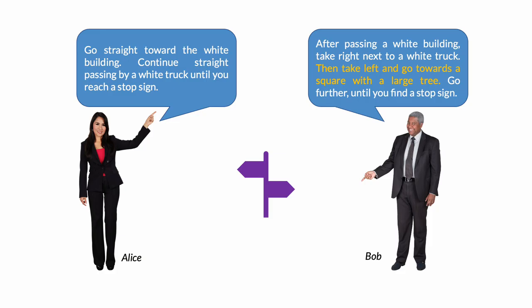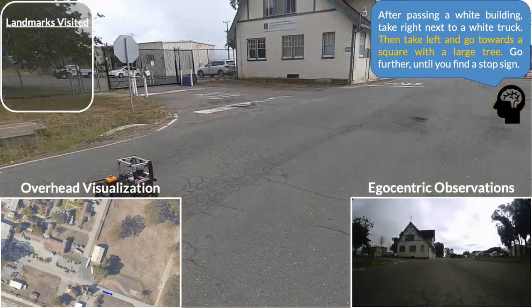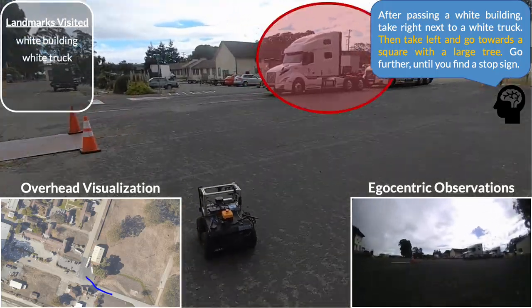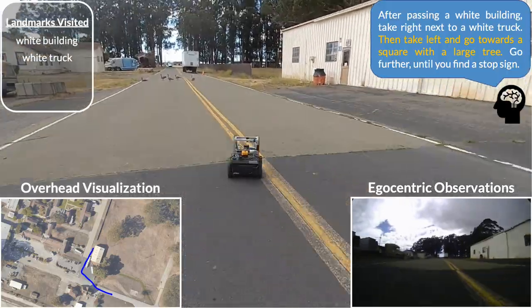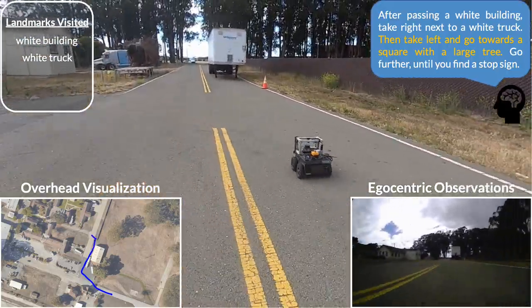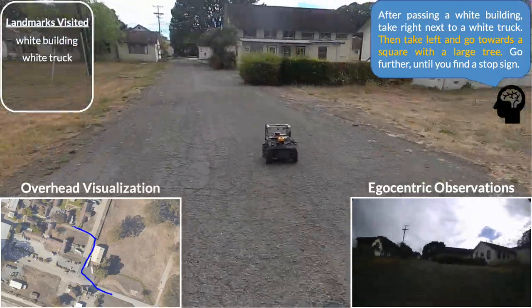Language is an inherently ambiguous means of task specification, and there may be multiple paths in the environment that satisfy the given instructions. In such cases, an instruction-following system must be able to disambiguate paths in the environment using fine-grained modifications to the instruction. Consider a clarification to the path by Bob, who specifies an additional landmark to provide information regarding which path to take. Commanding LMNav to follow this modified instruction, we notice that the system navigates to the first two landmarks identically, but then, reacting to the additional information, chooses a different path in the environment that visits a square with a large tree in the middle, satisfying the new instruction.